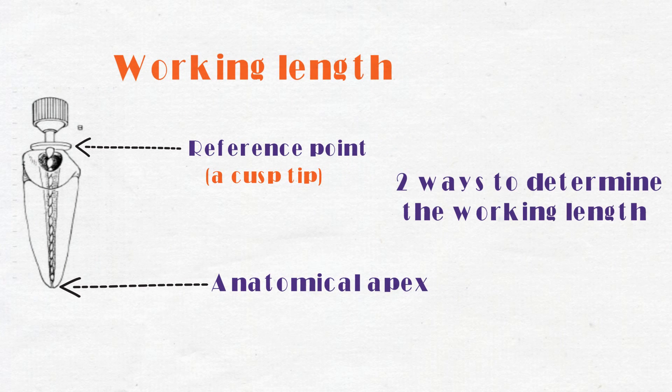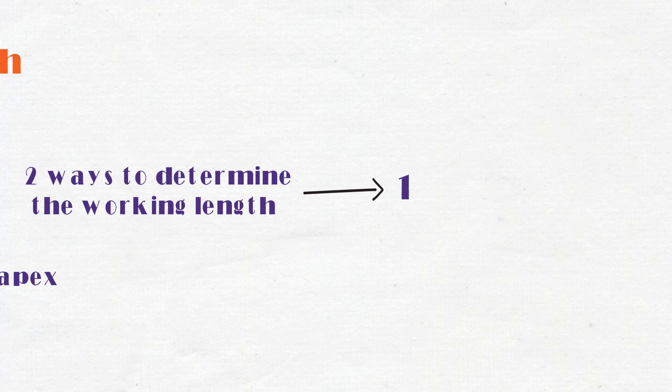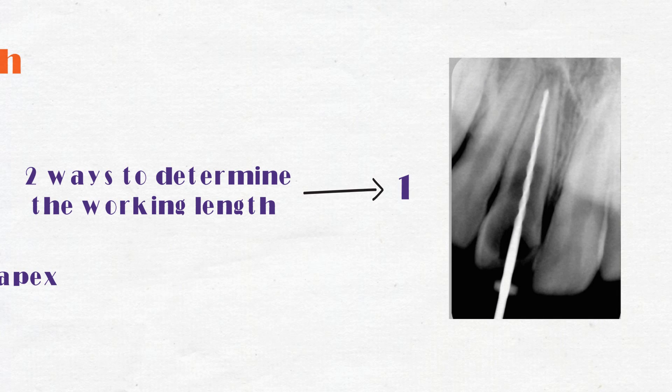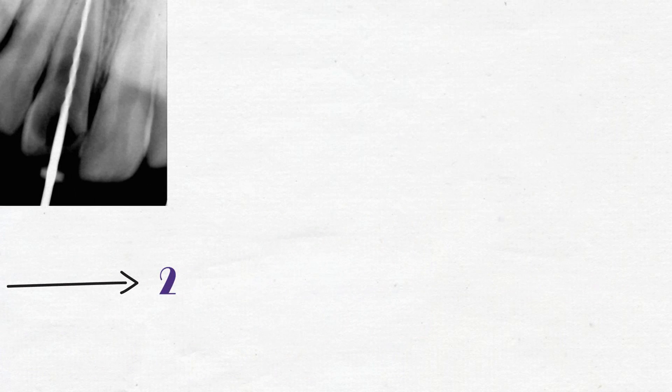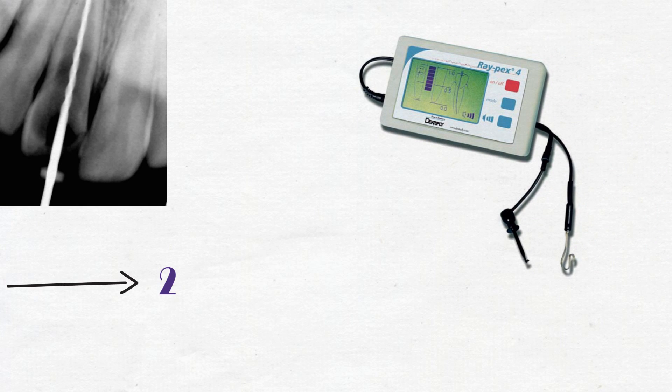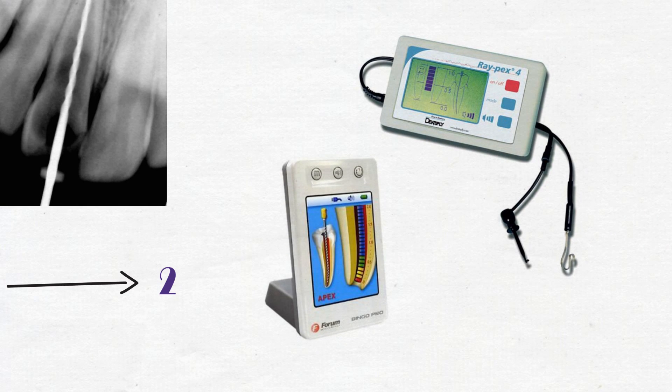Two ways to determine the working length. First, by x-ray that's taken while the file is inserted in the canal. In this situation, the apical foramen is usually found 0.5 to 1 mm shorter from the radiographic apex, so we need to decrease the length. Second, by electronic apex locators. They're designed to determine the canal length by giving the reading when the file tip is at the apical foramen.